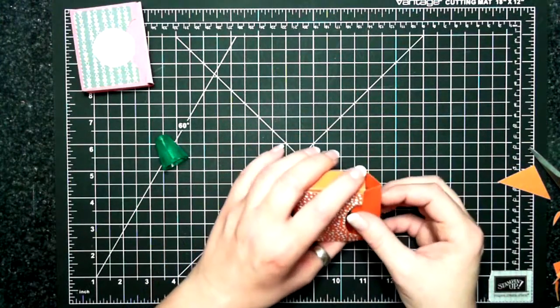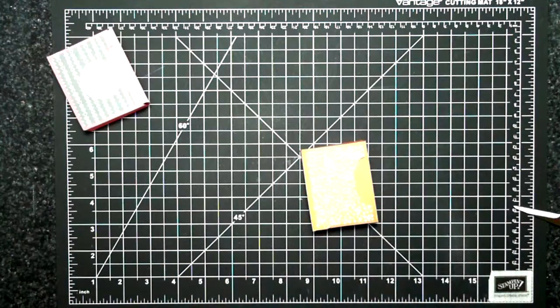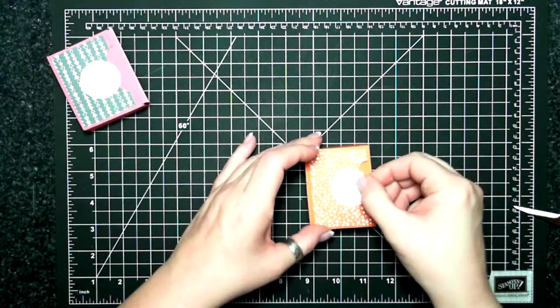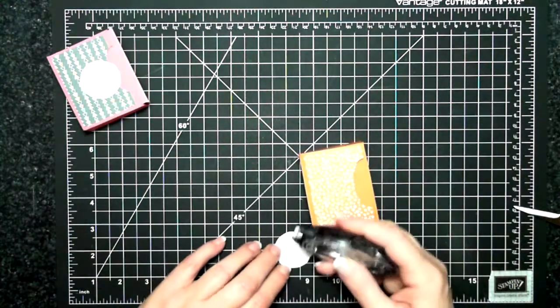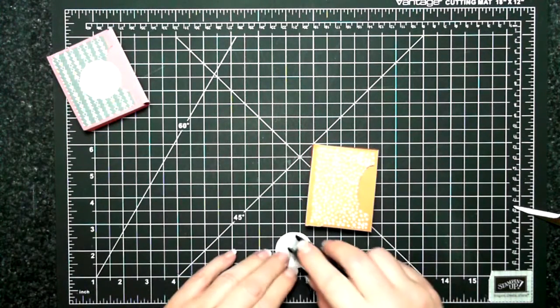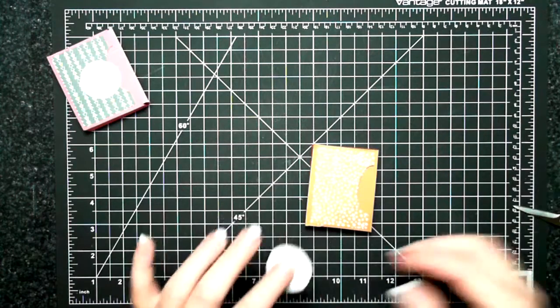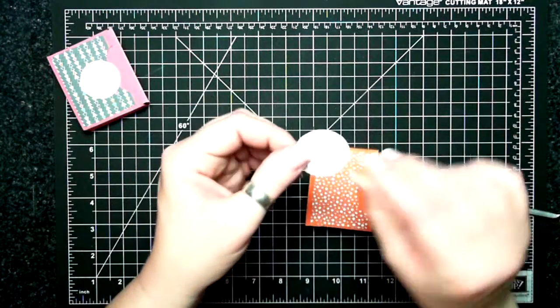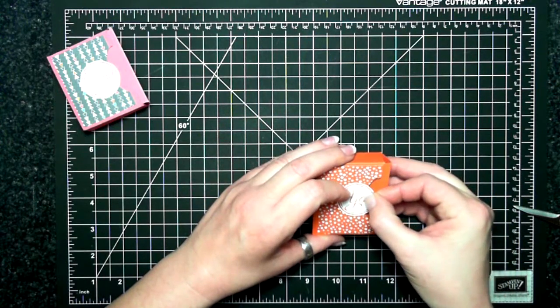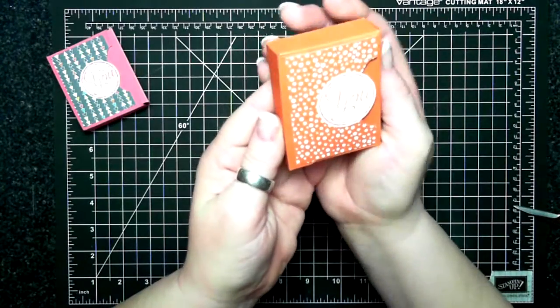And then this is the 'for you' which you can't see because my light is so bright but trust me it says something. And I'm just putting adhesive on the half side of that so it doesn't stick. That is so cute.